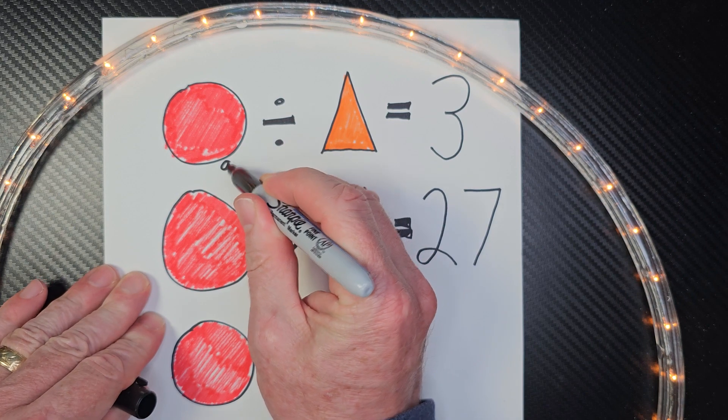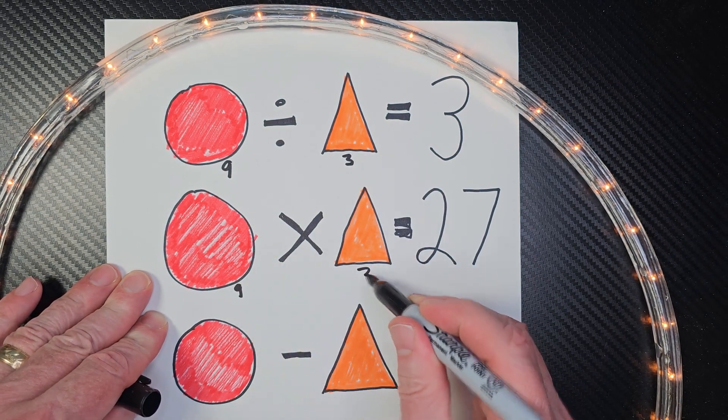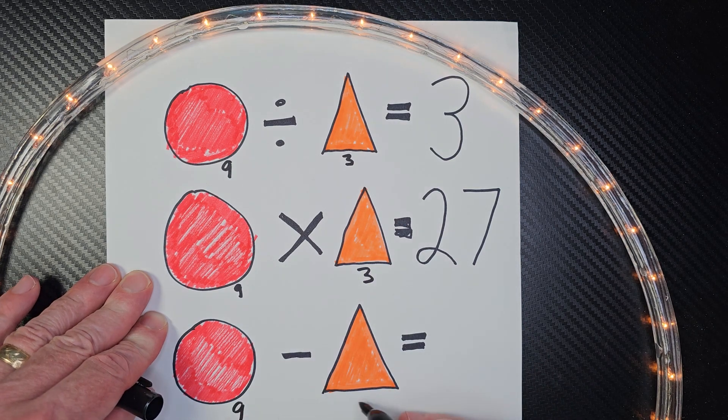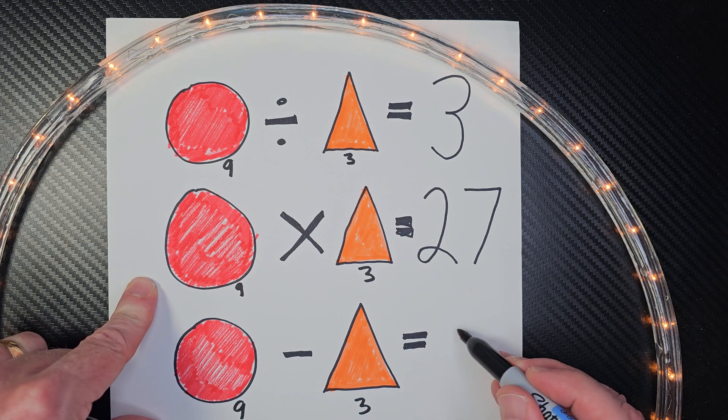So I'm just going to go ahead and put a 9 right here and a 3 right here, 9 here and a 3 here, and a 9 there and a 3 there. So 9 minus 3 would give me 6.